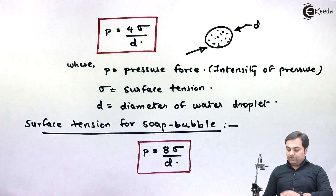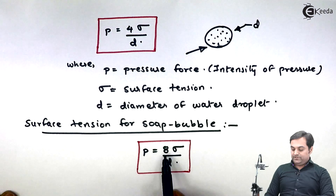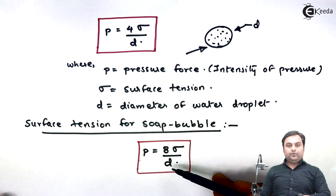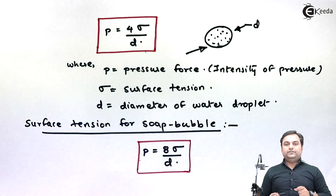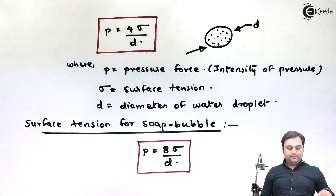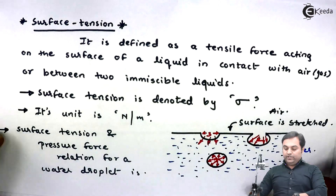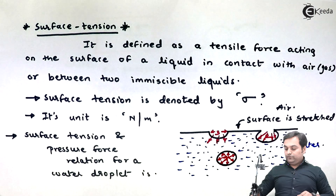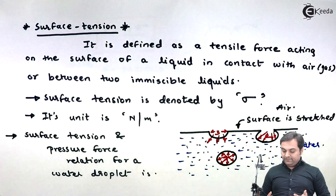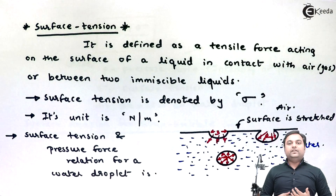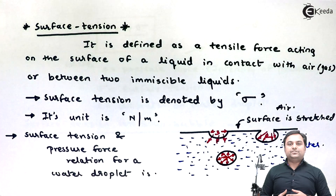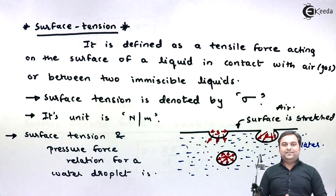So we have two different formulas: the first one is used for a water droplet, which is like a sphere, and the second formula is used for a soap bubble. In this video we have seen what surface tension is, how it acts, its unit, how it is denoted, and the explanation using a molecular diagram. I hope it is very much clear. Thank you.